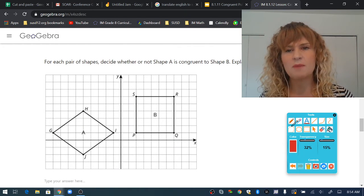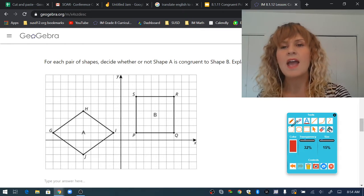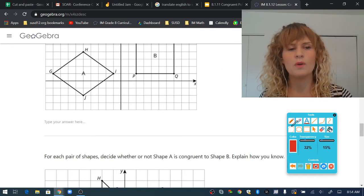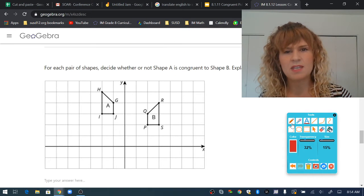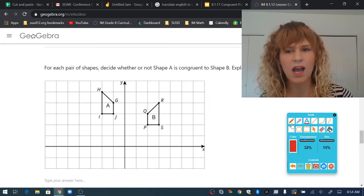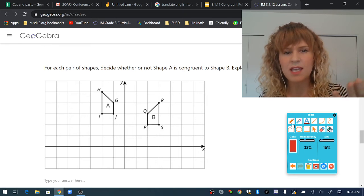Decide if these shapes are congruent or not. Explain how you know. Type your answer very well. Same for these. Are they congruent or not? What rigid transformation takes polygon A to polygon B?